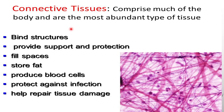The types of connective tissues include bones, cartilages, ligaments, and tendons. Ligaments and tendons are the types which bind structures — they help in attachment of muscle to muscle, bone to muscle, or bone to bone. Bones and cartilages provide support and protection to the body.